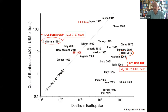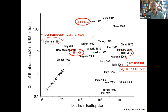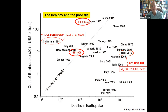All those high-death earthquakes on the right-hand side of the diagram are mostly in the interior of continents in that belt from the Mediterranean to China. The next big Los Angeles earthquake will probably kill about a thousand people and cost a vast amount of money. This contrast is sometimes summarized as 'the rich pay and the poor die' — and I want to examine that more closely from a geological angle.